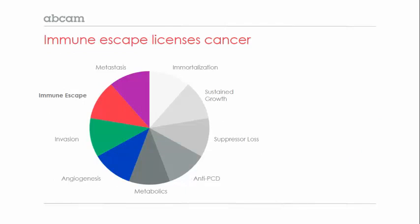Immune escape, as part of the traits of cancer, was popularized by figures taken from reviews by Hanahan and Weinberg. In 2000, when they first published this notion of different traits of cancer that cancer cells must acquire, immune escape was a part of the pie that was missing — it wasn't part of the mainstream. By 2010, it had become part of the mainstream. And it now appears that many of the mechanisms that license escape from the immune system are also tied into metastasis, invasion, angiogenesis, and metabolic pathways.